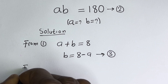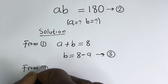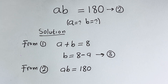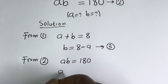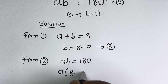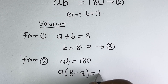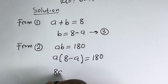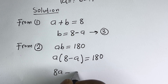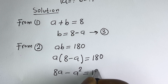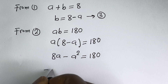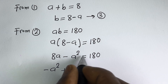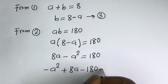Also from equation 2, AB is equal to 180. We can now substitute for B: A times (8 minus A) is equal to 180. Let's open the bracket: A multiplied by 8 is 8A, minus A multiplied by A, which is A squared, equals 180. So we have minus A squared plus 8A, and taking 180 to this side, minus 180 equals 0.